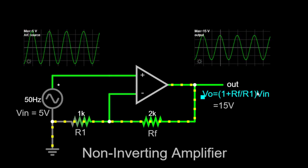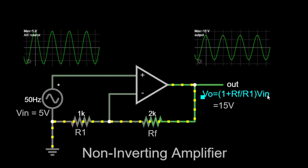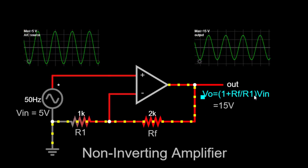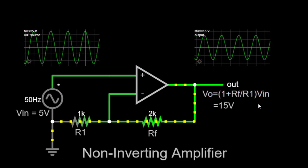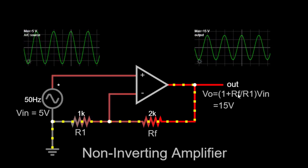This means the output voltage is proportional to the input voltage but amplified by a factor of 1 plus Rf by R1. This amplification occurs without altering the polarity of the input signal.